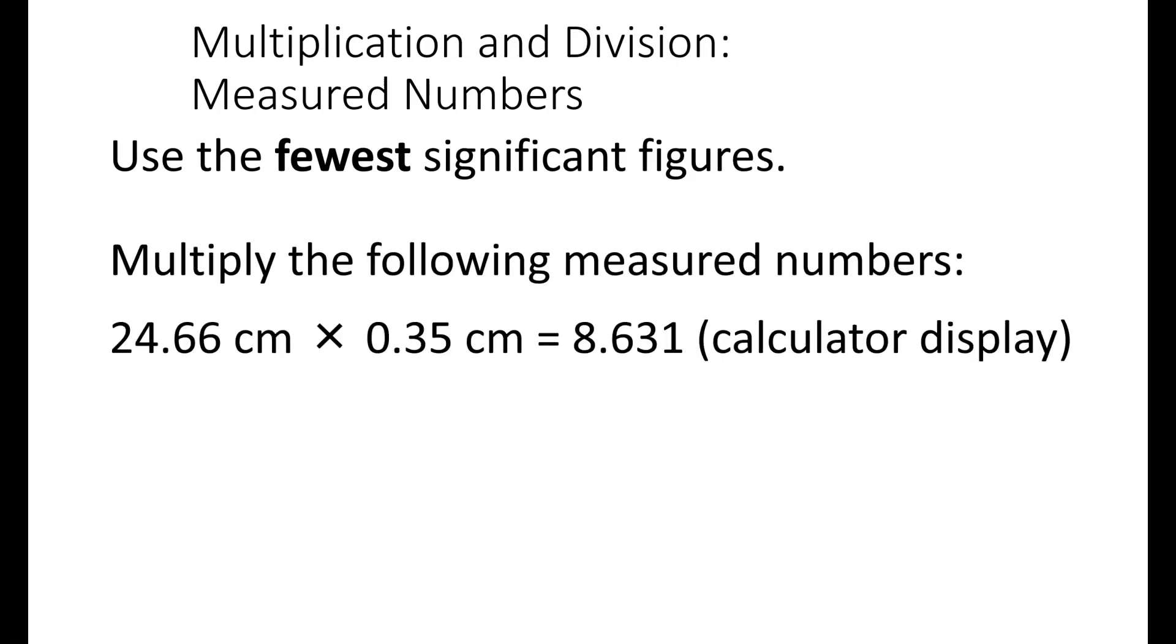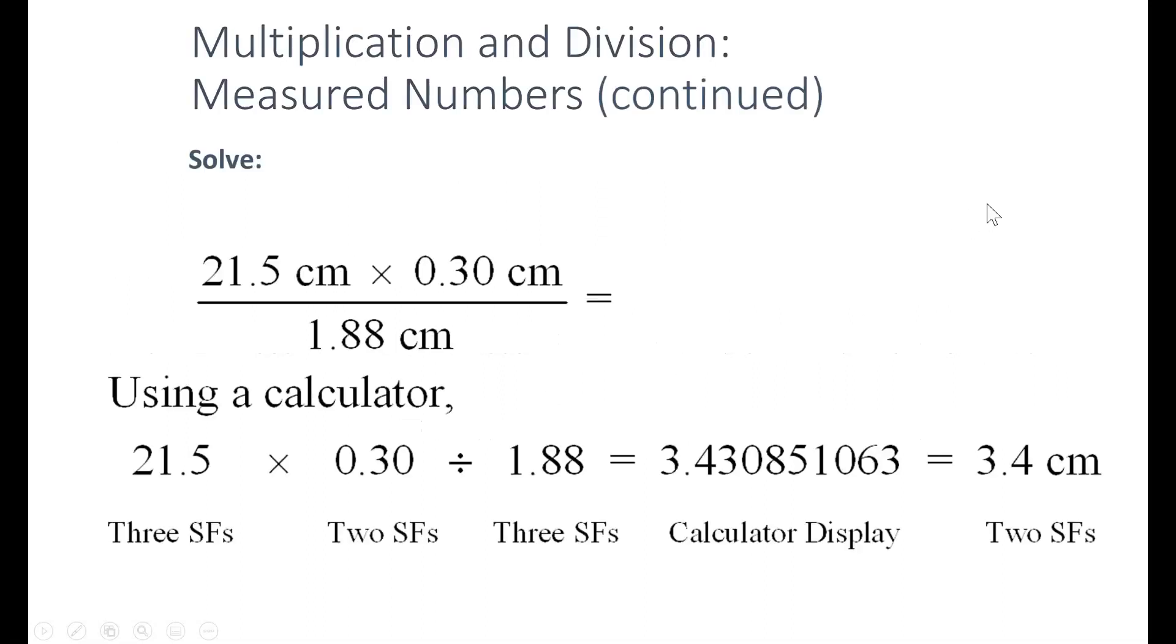For example, if I multiply 24.66 centimeters times 0.35 centimeters, I get 8.631 on my calculator, but I need to round this to the fewest significant figures. If I look, I have four significant figures in the first value, two in the second, so I'm going to have to round this final value to two significant figures as well. That gives me 8.6 centimeters squared.